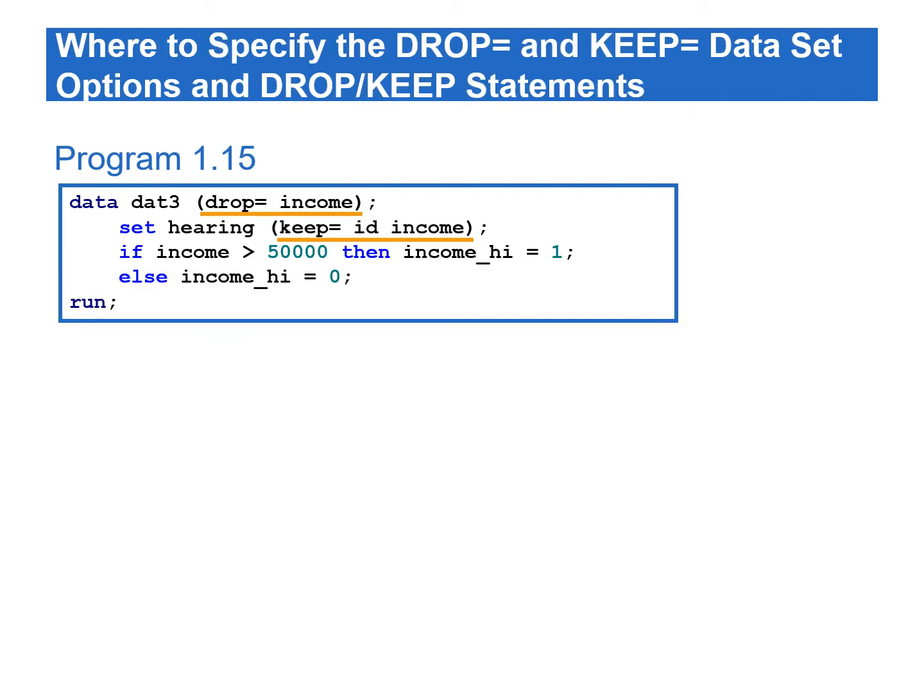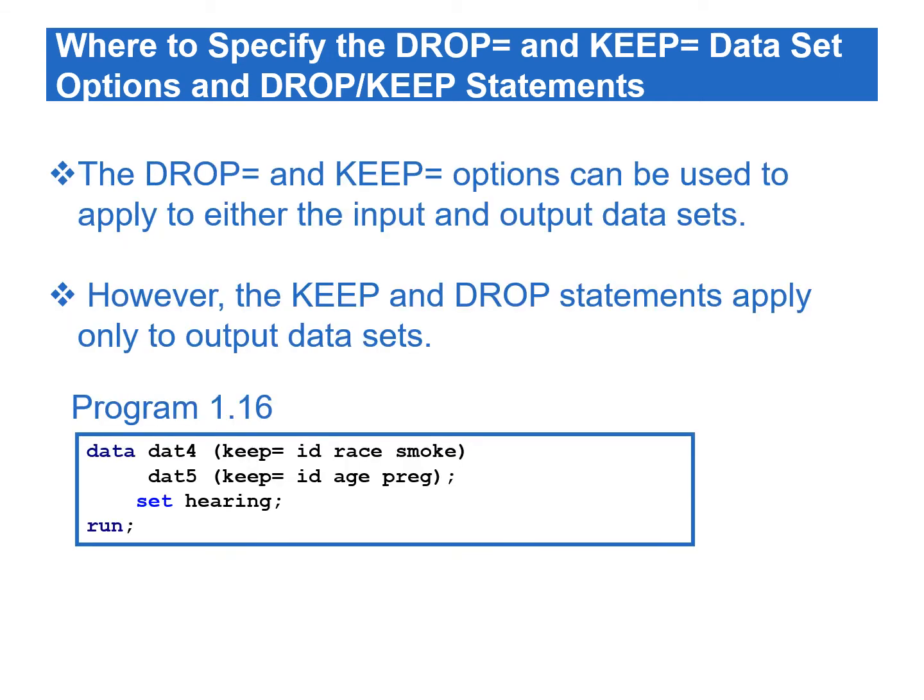We can specify the DROP= and KEEP= data set options in either the DATA statement or the SET statement, depending on whether we want to process the values of the variables in the data step. For example, Program 1.15 creates a data set with two variables: id and income_high. The KEEP= option is used in the SET statement to read id and income from the input data hearing. Since we don't need income in the output data set, we specify income in the DROP= option in the DATA statement. The DROP= and KEEP= data set options can apply to input or output data sets, but the KEEP and DROP statements apply only to output data sets. When creating multiple output data sets, we can use DROP= or KEEP= to write different variables to different data sets, while DROP or KEEP statements apply to all output data sets.